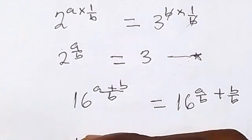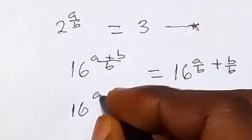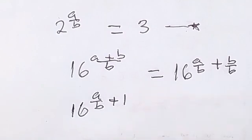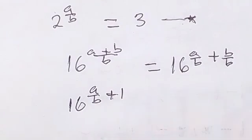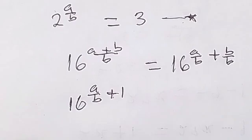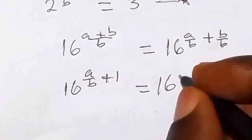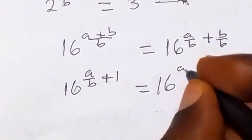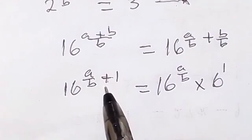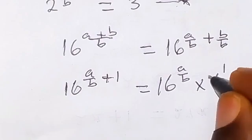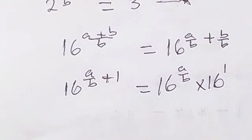So we can equally write it as 16 raised to power (a over b) plus 1. And we know when we sum the power, we already know that we have the same base multiplying each other. And this can be split as 16 raised to power (a over b) times 16 raised to power 1. That is when the same base multiplied, we can just add the power.